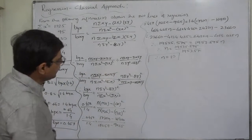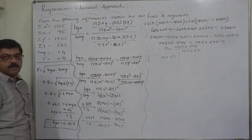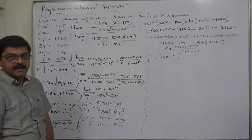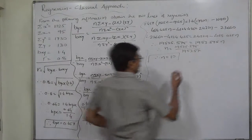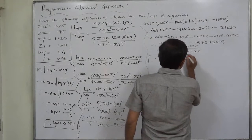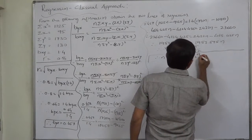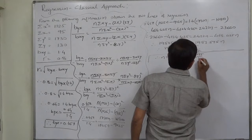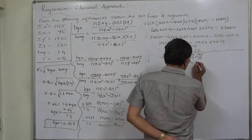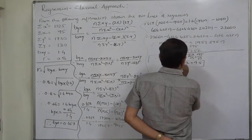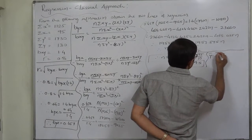So n is approximately 10, and since n is always an integer, n = 10. Now we have n, sigma x, and sigma y, so we can find the two means. x bar = sigma x / n = 95 / 10 = 9.5.